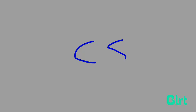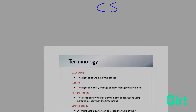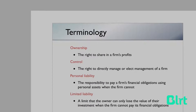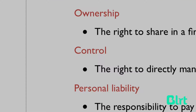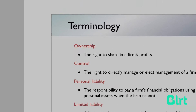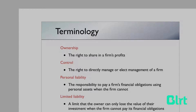Hey everyone, today we're going to go through a quick introduction of corporate structure and look at the different types of business ownerships that exist, as well as some of the key personnel involved in these organisations. There's some terminology that you'll need to familiarise yourself with, and it's really important that you understand the distinction between ownership and control. Let's look at an example to explain this.